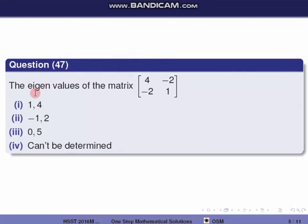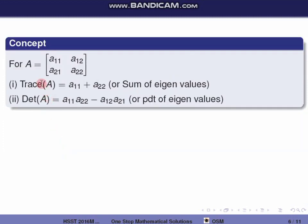Next question, question 47. The eigenvalues of the matrix [4, −2; −2, 1] are to be found. For a 2×2 matrix A with entries A11, A12, A21, A22: the trace equals A11 + A22, which is the sum of eigenvalues, and the determinant equals A11·A22 − A12·A21, which is the product of eigenvalues.